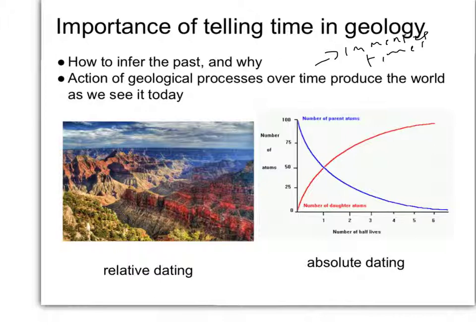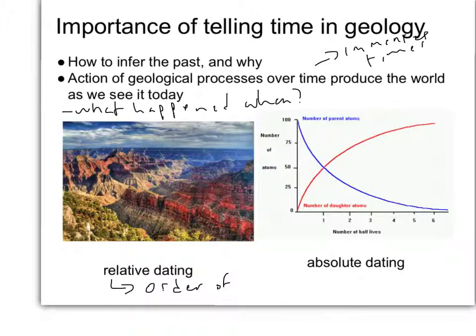With trying to reconstruct the history, a very important question is essentially: what happened when? As a geologist, we spend a lot of time trying to put dates on events that happened in the past, and there are two basic approaches. Relative dating gives you the order of events but not necessarily absolute times, whereas absolute dating gives you exact dates within the resolution of the dating technique being used.